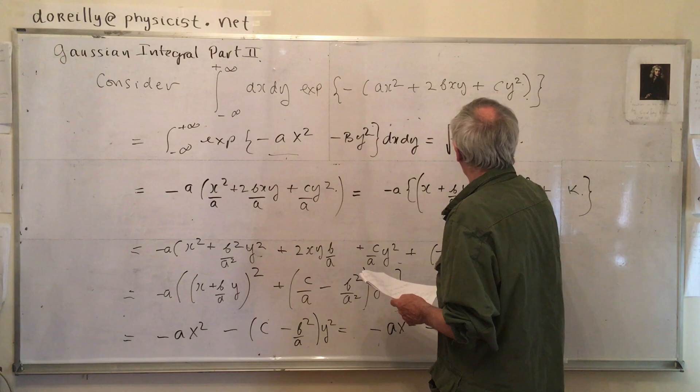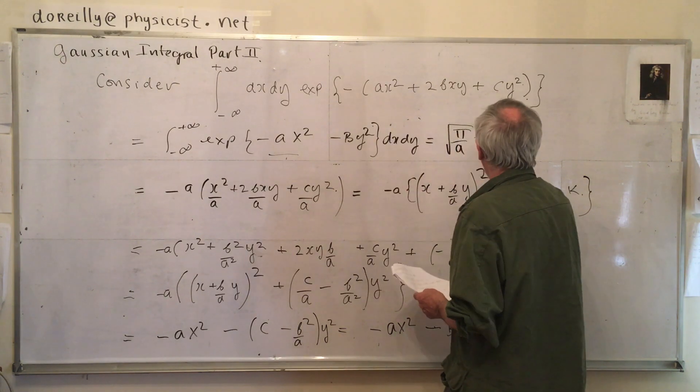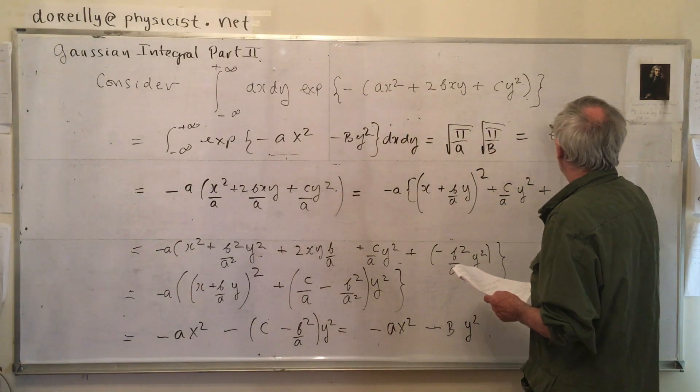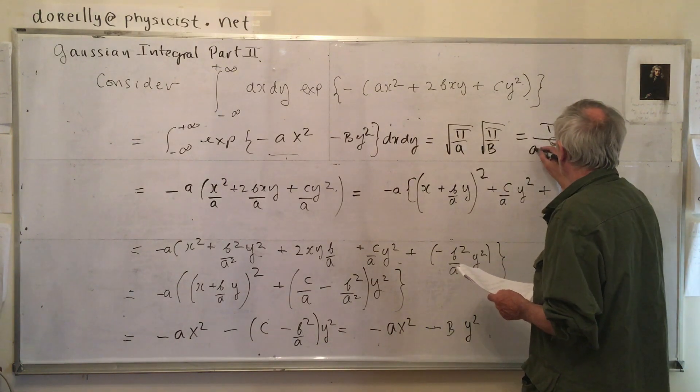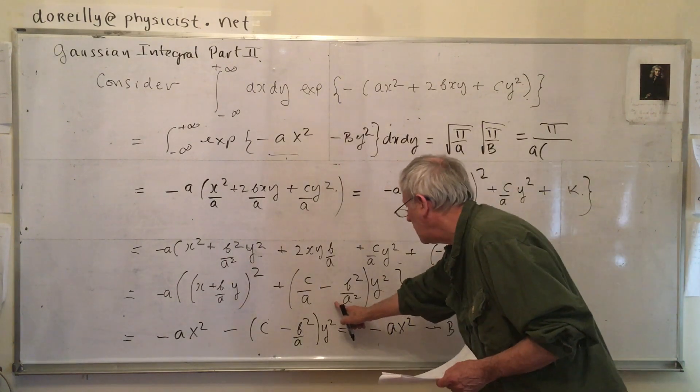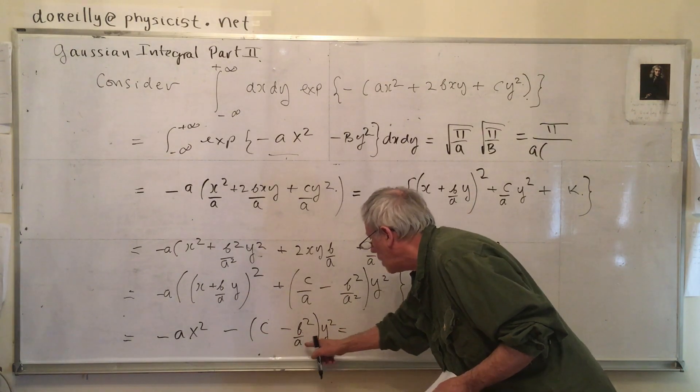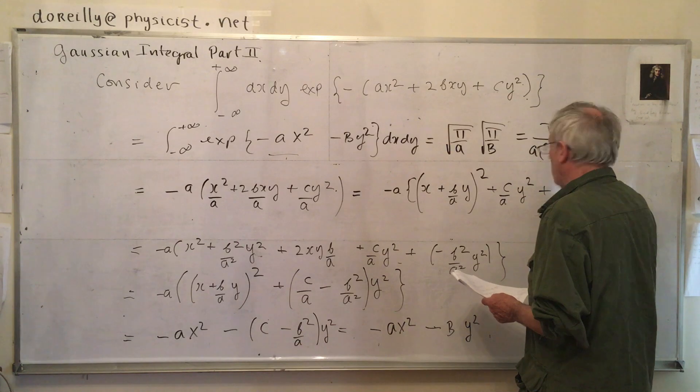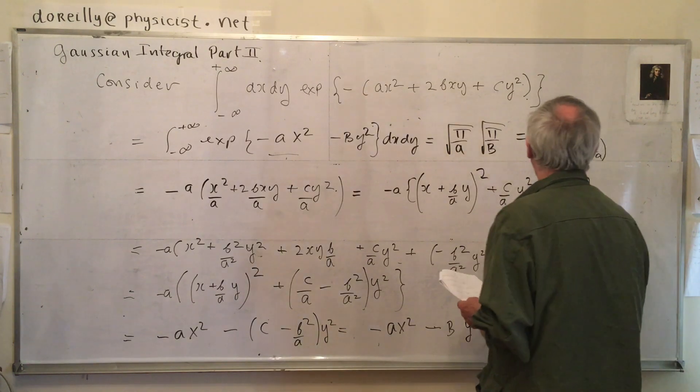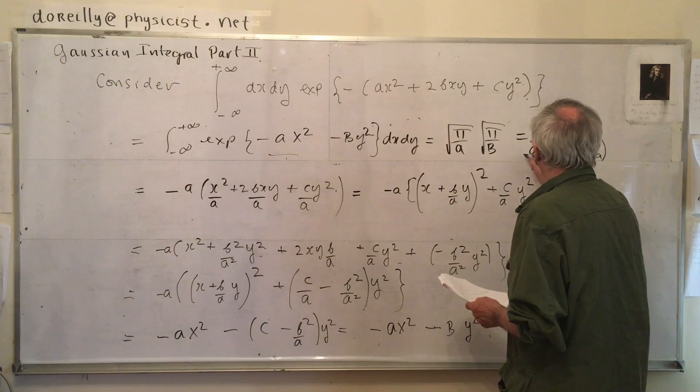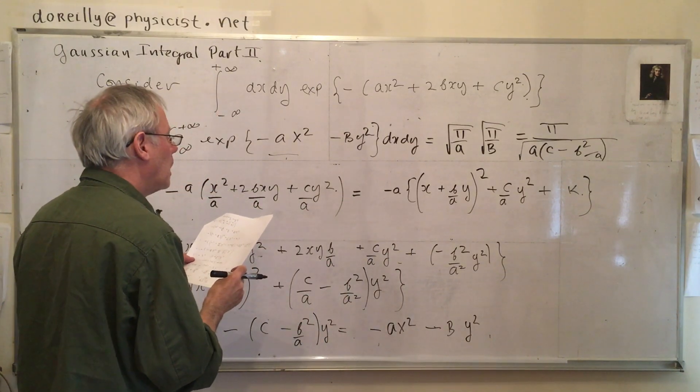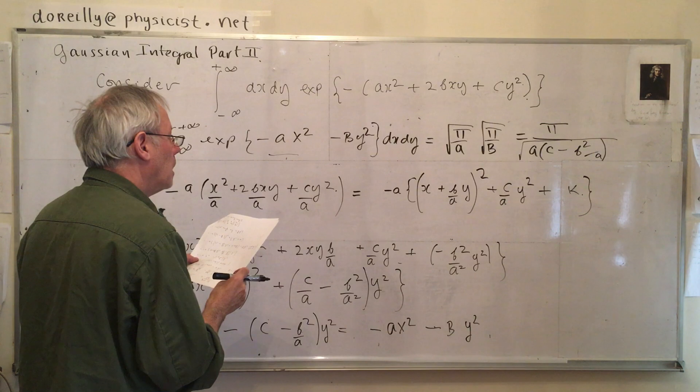So taking the integral of this one here, I get root pi over A. And taking the integral here, I get root pi over B. Root pi times root pi is pi, and we get AB. Now what is B? B is this object here. Did I get that right? No, B is this object here. Sorry, C over B squared over A. Right? That's the B. Okay, actually, this is going to be square rooted. Yeah.